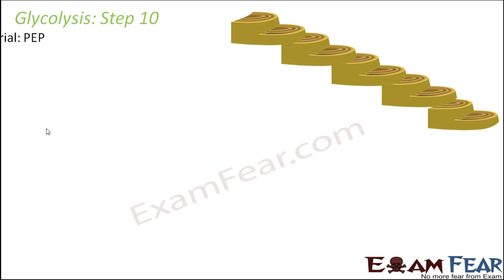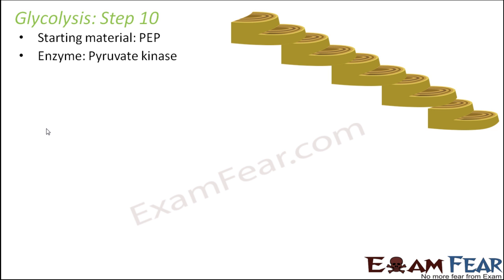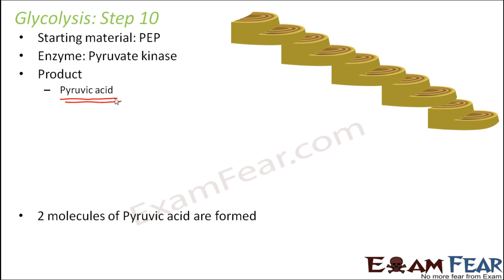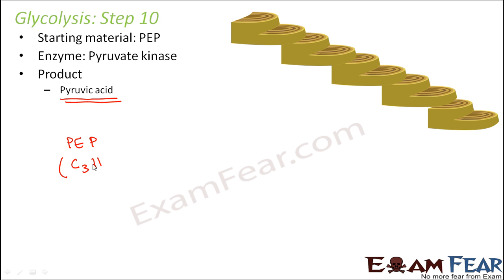Step 10 is the final step of glycolysis. The starting material is PEP — phosphoenolpyruvic acid — and the enzyme is pyruvate kinase. Again, since this is a kinase enzyme, it involves phosphorylation. The product is pyruvic acid, which was the goal of glycolysis — converting glucose, a six-carbon compound, into two molecules of the three-carbon compound pyruvic acid. The molecular formula of PEP is C₃H₃O₃P.